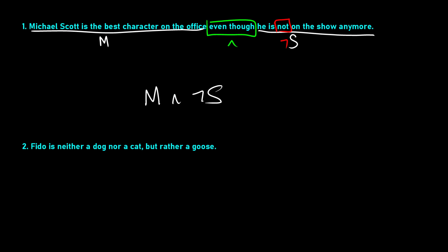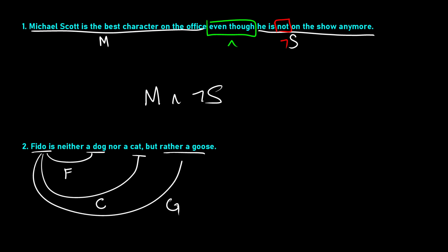We have some propositions we can extract: Fido is a dog — this could be F; Fido is a cat — this could be C; and Fido is a goose — we could write this as G. So we have three propositions. Now let's figure out what we do about 'neither' and 'nor.' We can translate the first bit as NOT (F OR C) — it is not the case that Fido is a dog or a cat. We could also translate this as NOT F AND NOT C. Either way works; you have two options.